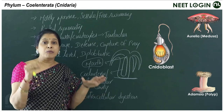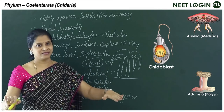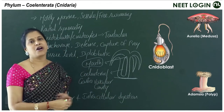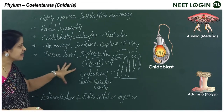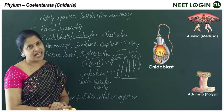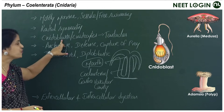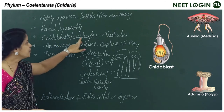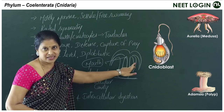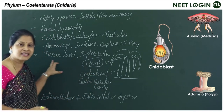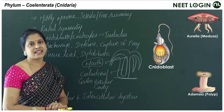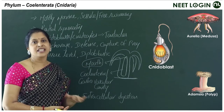All are aquatic, mostly marine, with some freshwater forms. The phylum is called Cnidaria due to the presence of cnidoblasts or cnidocytes on the tentacles. These are stinging cells. They contain a fluid-filled capsule called nematocyst. Because of the presence of these stinging cells, predators avoid approaching cnidarians.